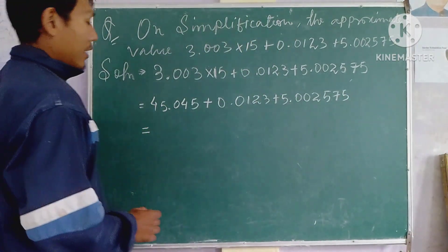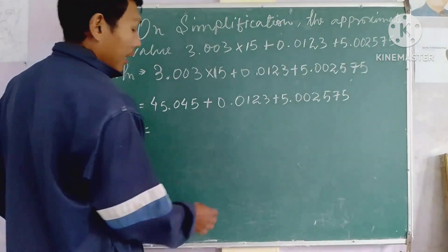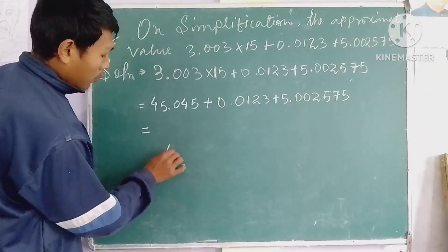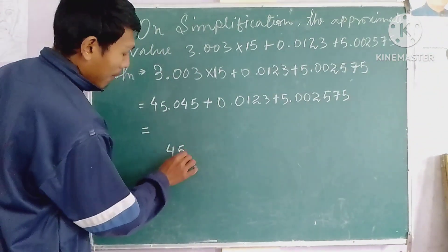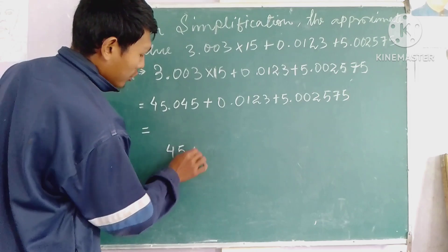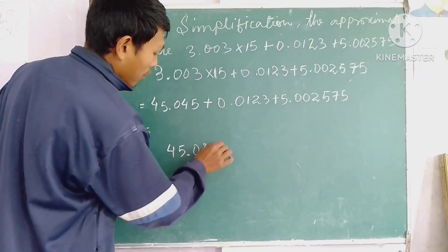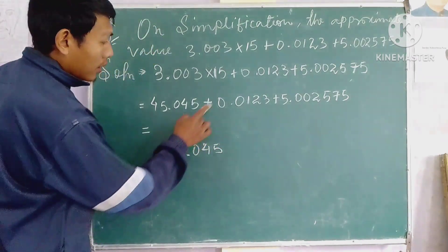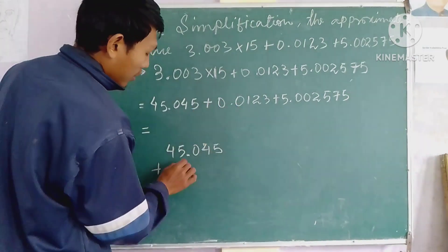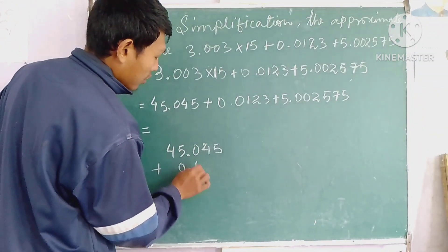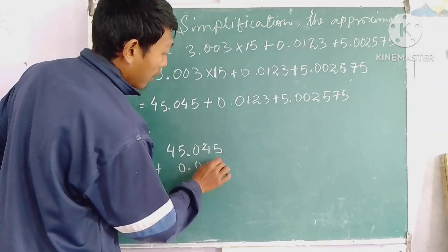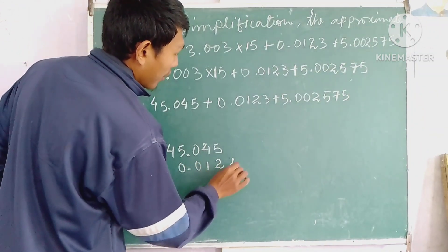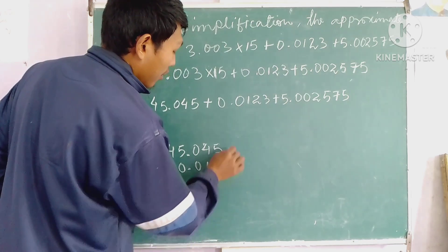So, 45, 0, 0, 4, 5, plus, 0, 0, 0, 1, 2, 3.